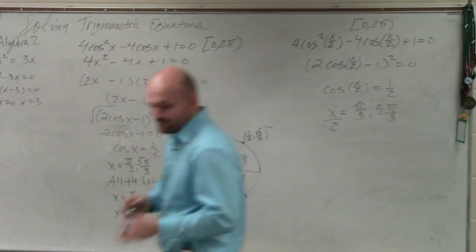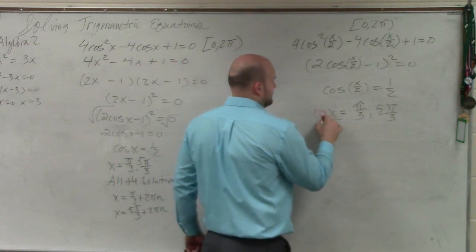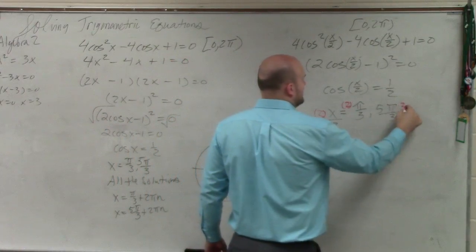So to undo dividing by 2, we need to multiply by 2. So you multiply by 2 on both sides.